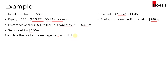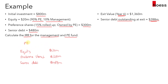At time zero, the initial investment is broken down as follows: equity totals $20 million, with management contributing $2 million and the PE fund contributing $18 million. Preference shares are $300 million and senior debt is $480 million, which sums to $800 million in total initial investment.